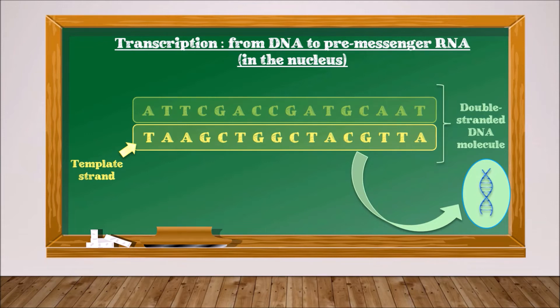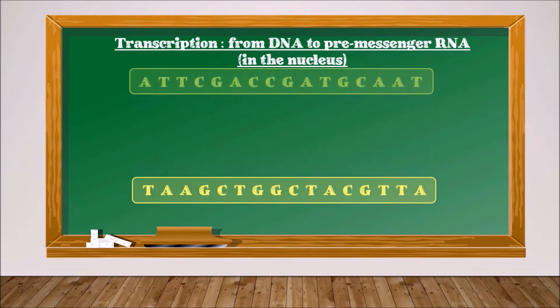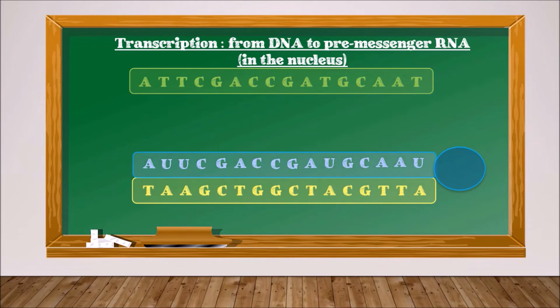The two DNA strands are separated and an enzyme appears: the RNA polymerase. Its role is to make a complementary strand to the template DNA strand. The only difference is that instead of putting thymines in front of adenines, it puts uracils.